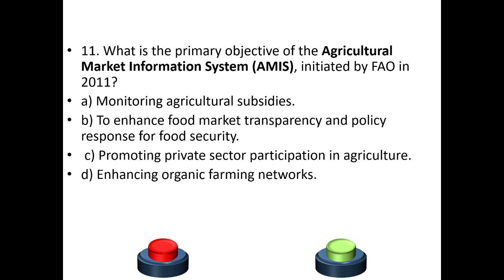Question 11: What is the primary objective of the Agricultural Market Information System (AMIS), initiated by FAO in 2011? The answer is: to enhance food market transparency and policy response for food security by monitoring agricultural markets.